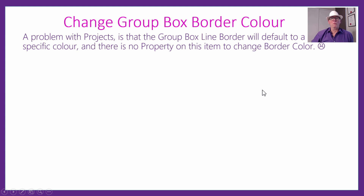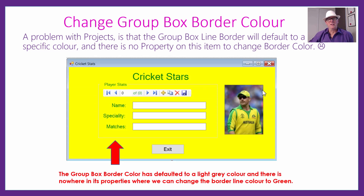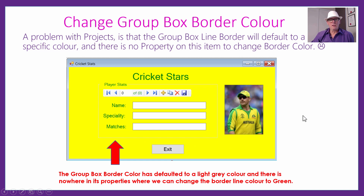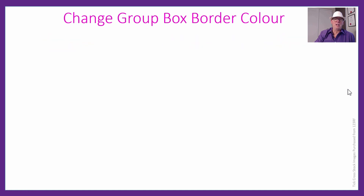Our problem with projects that our students have had and pointed out to us is that when you have a GroupBox, the line border defaults to some specific color and there's no property on that item to actually change border color. So if you're doing a screen like this for cricket stars or something like that, and for Australia it's these green and yellow colors, we really want that GroupBox border to be green. It's a really light gray at the moment. And when you click on the GroupBox and go to the properties in VB.NET, there isn't actually a border color property to change, which is kind of really strange, but that's just the way VB.NET is.